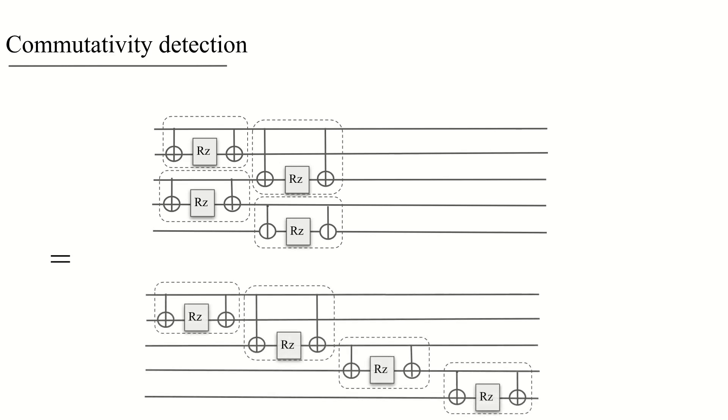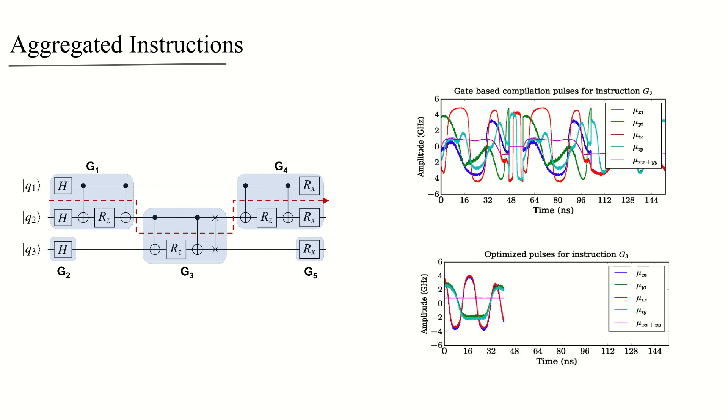Then, we aggregate the instructions again to send to the optimal control unit to generate optimized pulses for the target system. Our algorithm ensures that the aggregation does not compromise parallelism in the circuits.